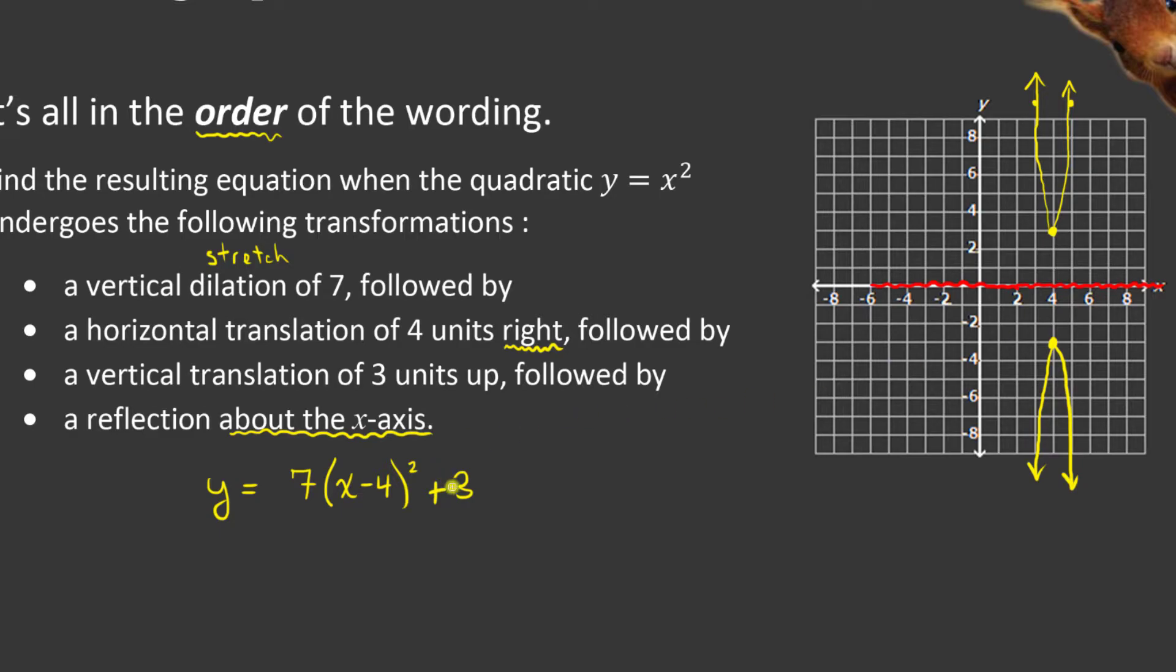It is the point of reflection. That means that my entire equation gets multiplied by negative 1, not just the a value. That's where the confusion tends to lie.